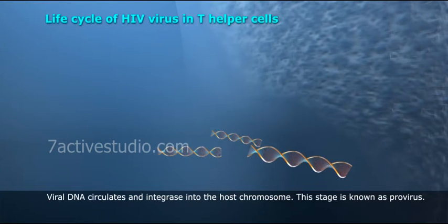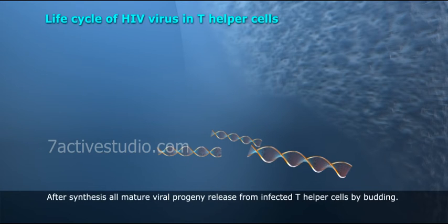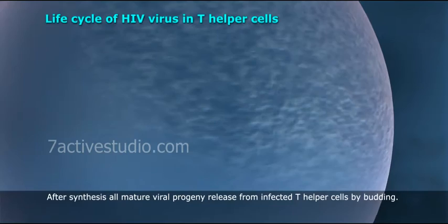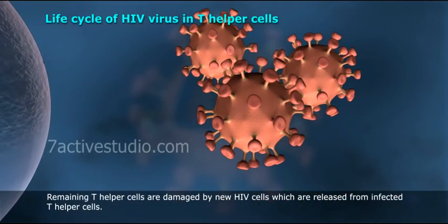This stage is known as provirus. By using the host machinery, it transcribes viral mRNA to synthesize all viral enzymes. After synthesis, all mature viral progeny are released from infected T helper cells by budding.